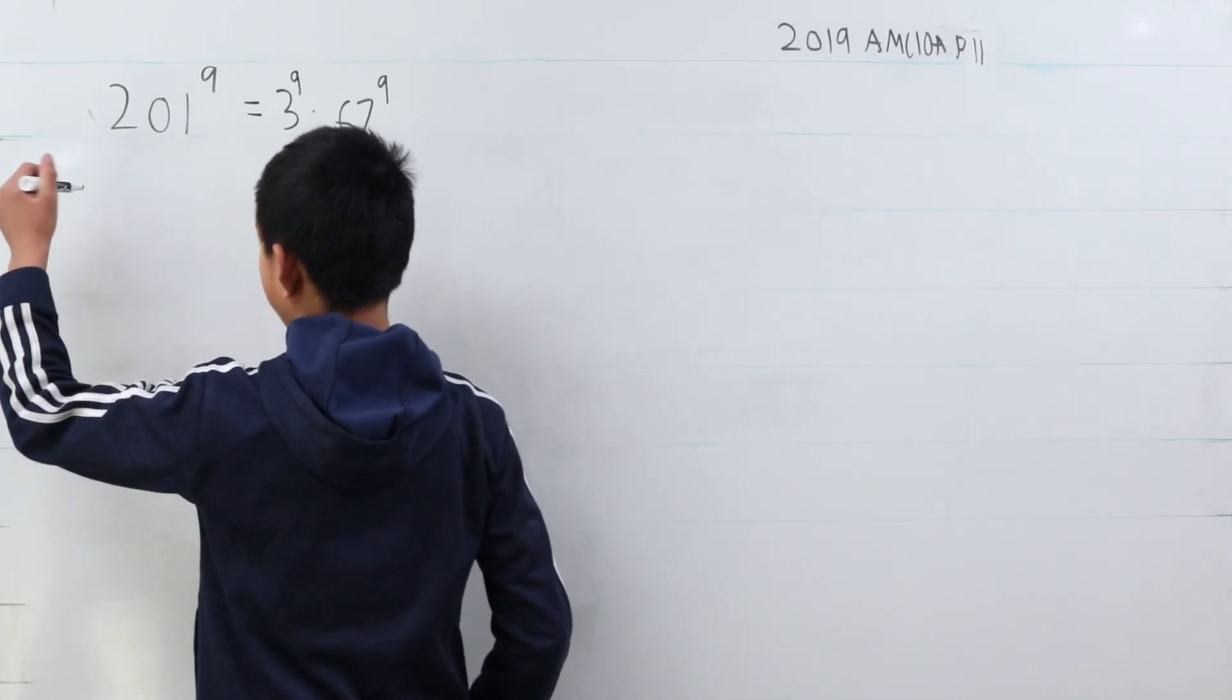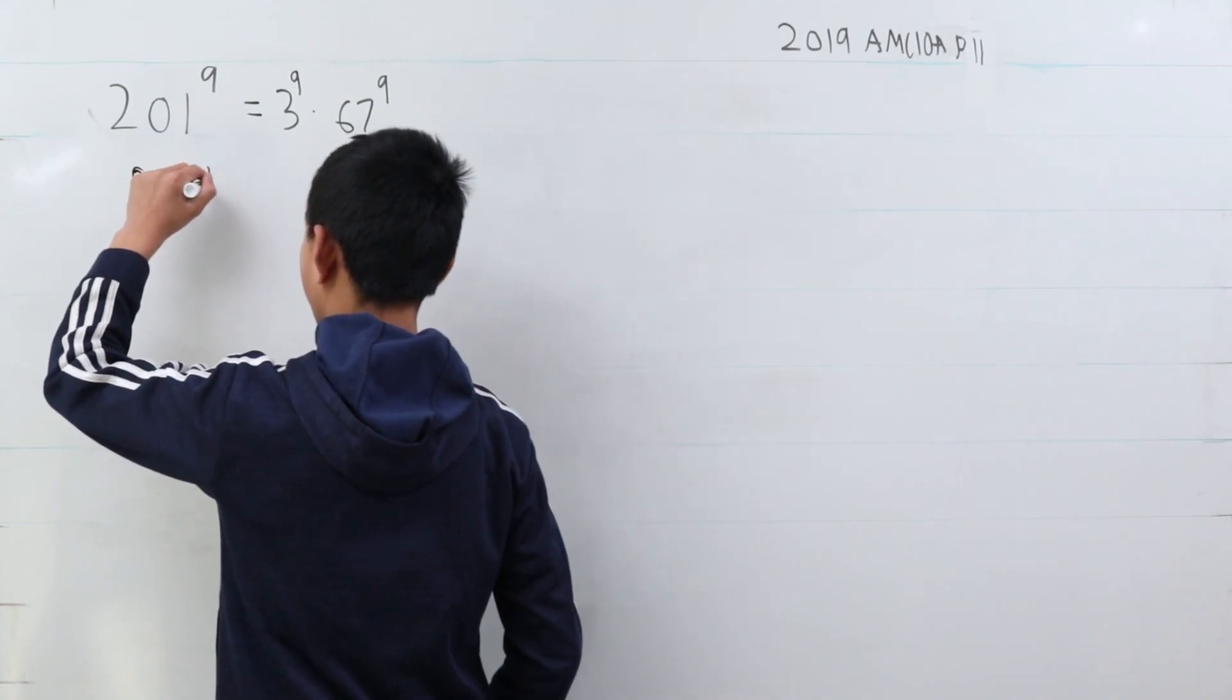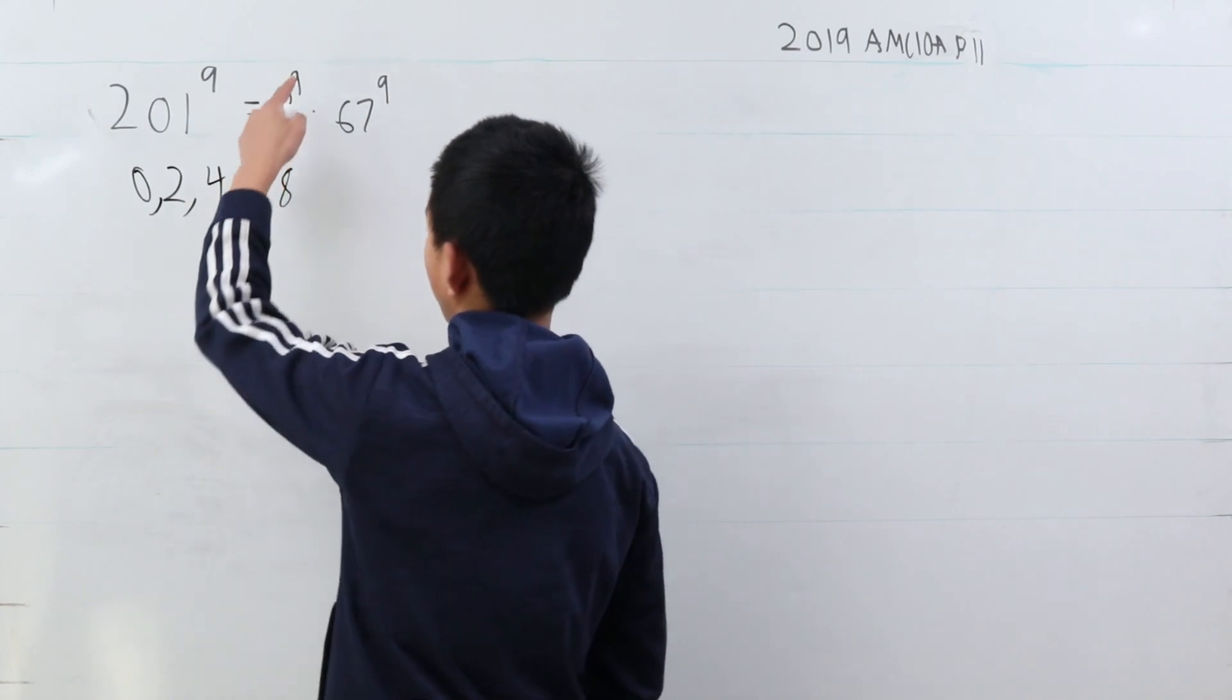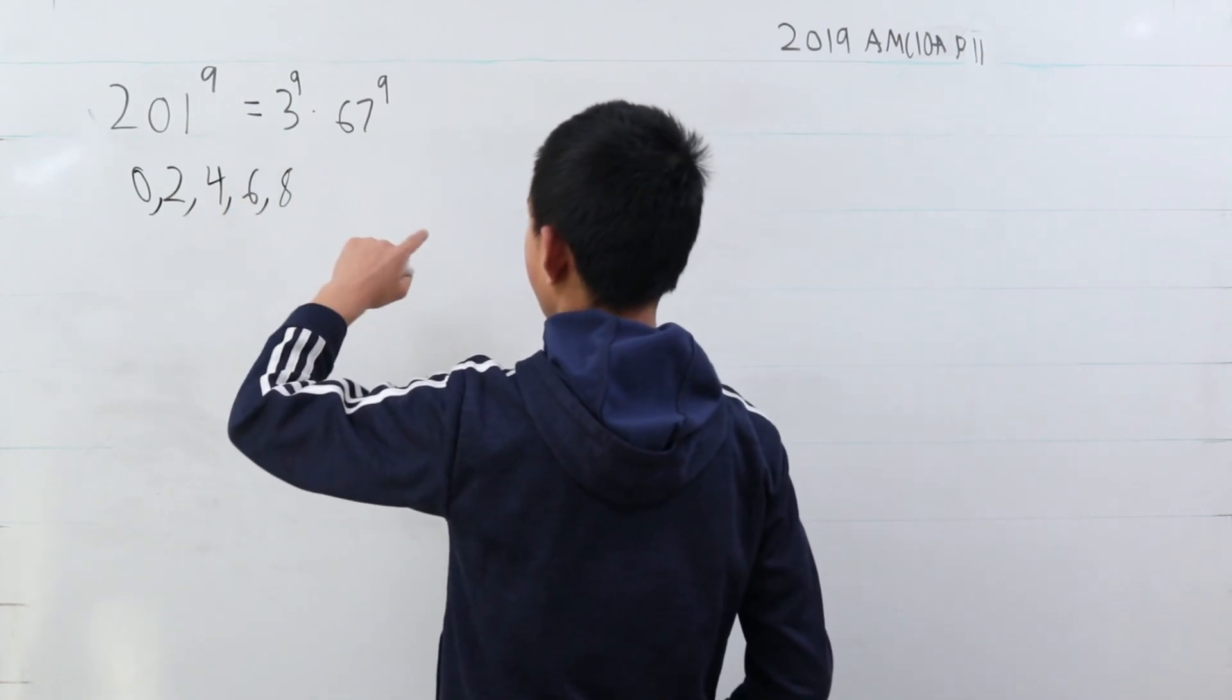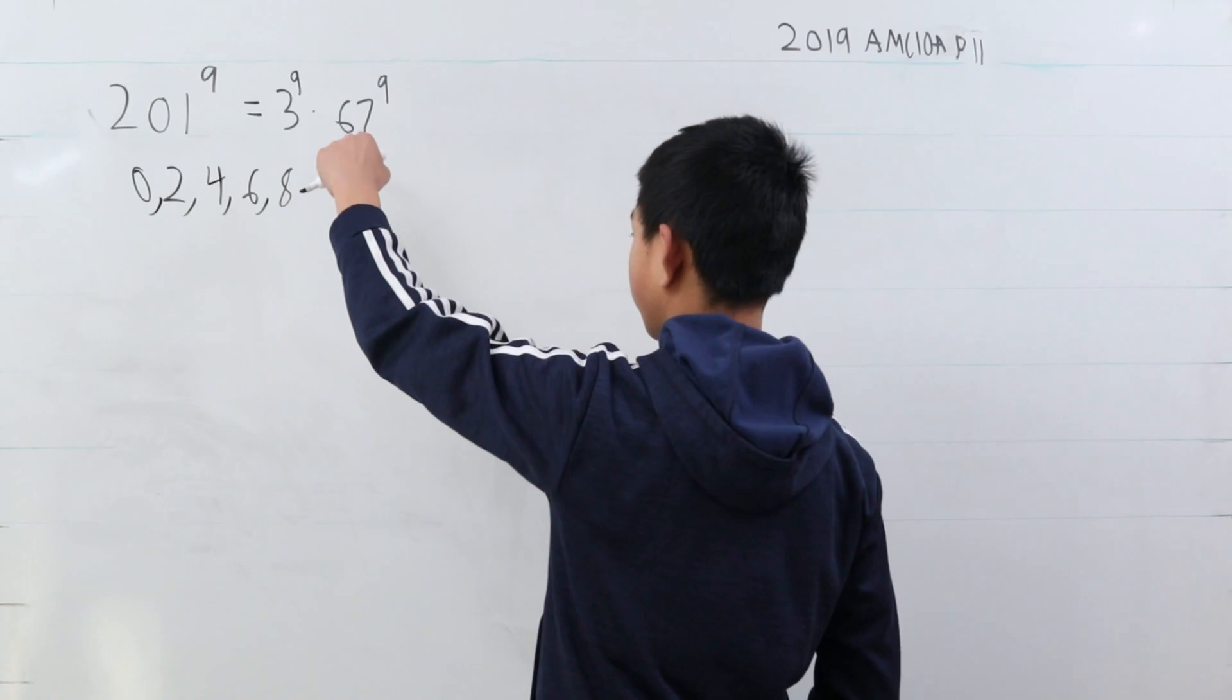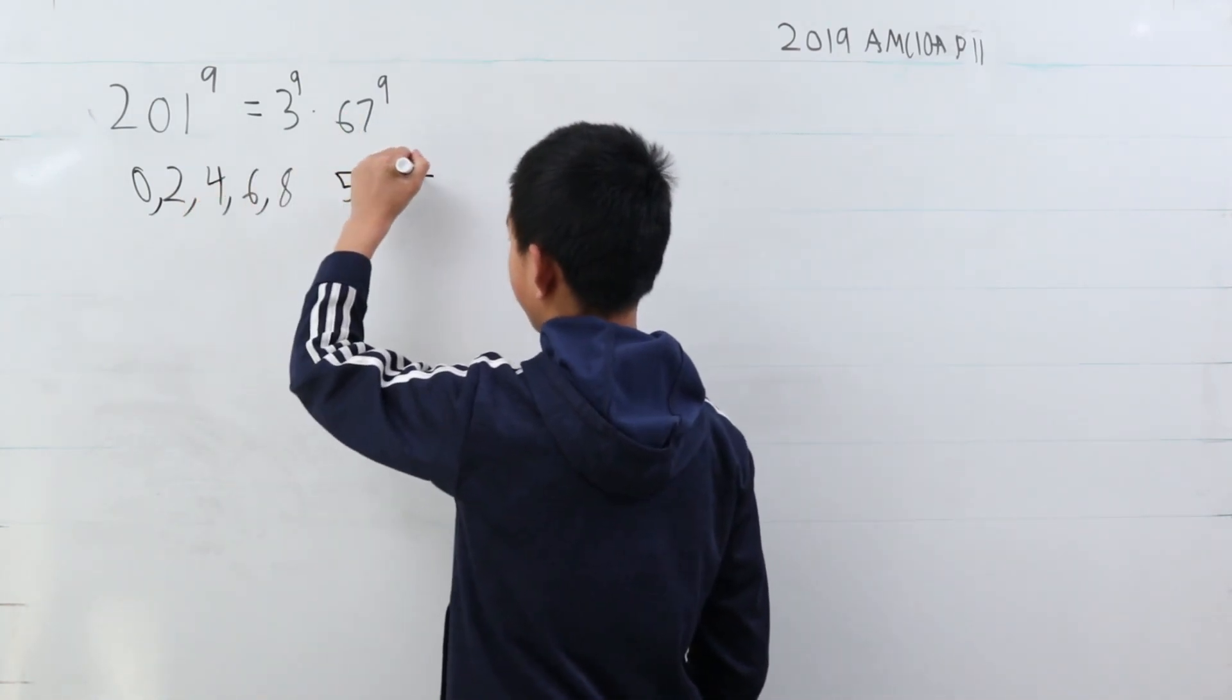If it's a square, then that means it has to have powers of 0, 2, 4, 6, or 8 on one of them. It can have like 8 on the 3 and 6 on the 67. So, that's 5. Since there's two prime terms, we multiply 5 and 5, which is 25.